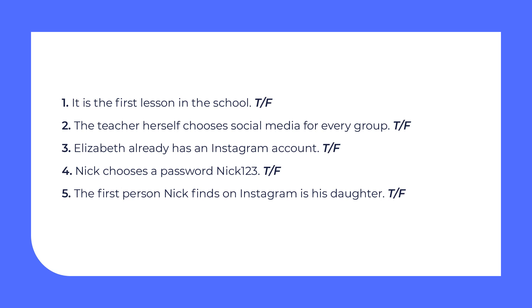Let's check together. 1. It is the first lesson in the school — False, because they already know a lot of things. 2. The teacher herself chooses social media for every group — False, because it is chosen randomly. 3. Elizabeth already has an Instagram account — True. 4. Nick chooses a password nick123 — False, because it is the password that Elizabeth asks not to choose. 5. The first person Nick finds on Instagram is his daughter — False, because Nick firstly finds his son.